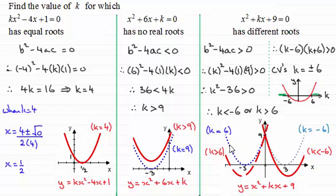In summary, for the graphs of y equals x squared plus kx plus 9: when k is greater than 6 or when k is less than minus 6, you get two different roots. When k equals 6 or k equals minus 6, you get just one root — those roots being minus 3 and 3 respectively. That brings us to the end of this tutorial, and I hope it's given you some idea of how to handle questions like this.